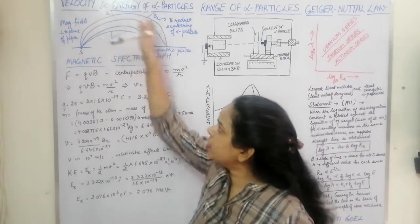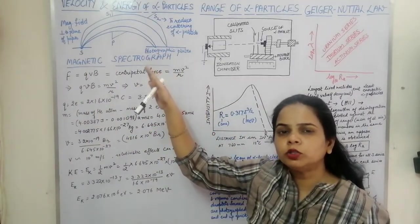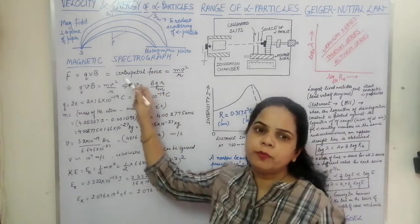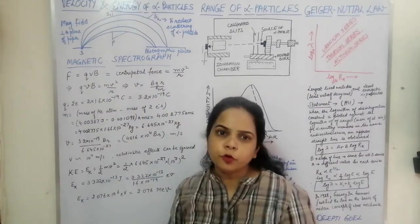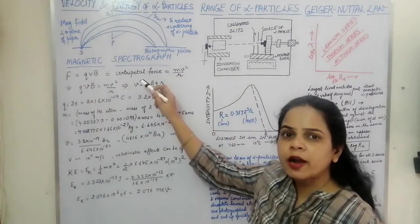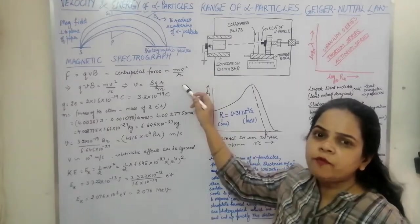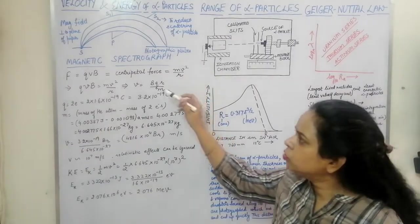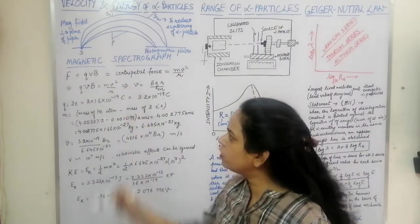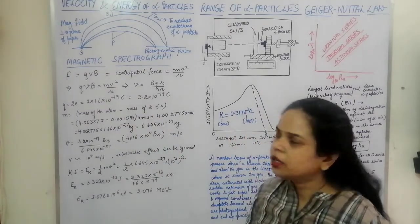Since the alpha particles are moving in a circular path, there is also a centripetal force acting on them. This centripetal force is balanced by the magnetic force. The centripetal force is given by Mv²/R, so we have QvB = Mv²/R.